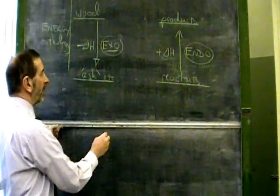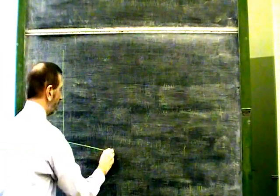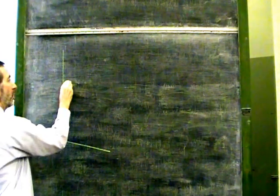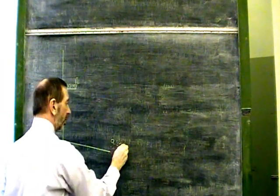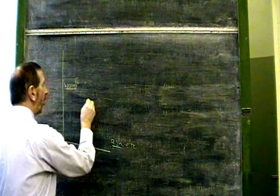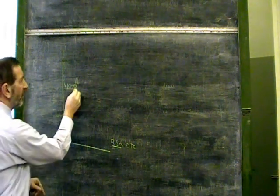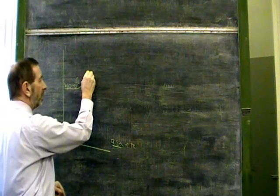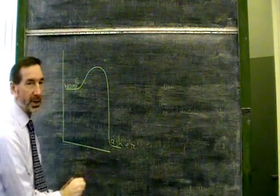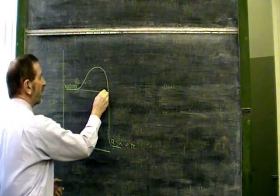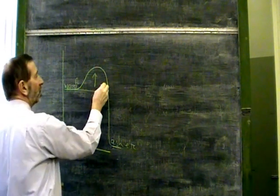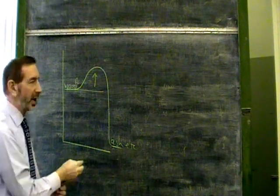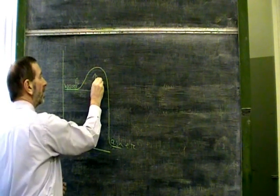We usually have to have a bit of an energy hurdle to overcome. So if we take this exothermic reaction, here's a more accurate representation. If we imagine this is the wood, and this is the ash, etc., then to go from wood to ash, we first have to put energy in, and then the energy comes out. The energy which has to be supplied to kick start this reaction is called the activation energy, and it's given the symbol EA.